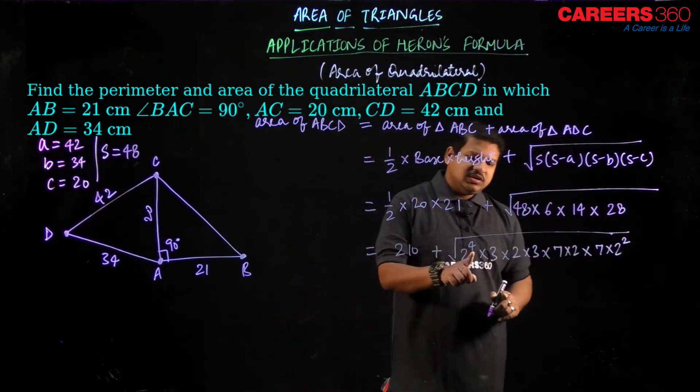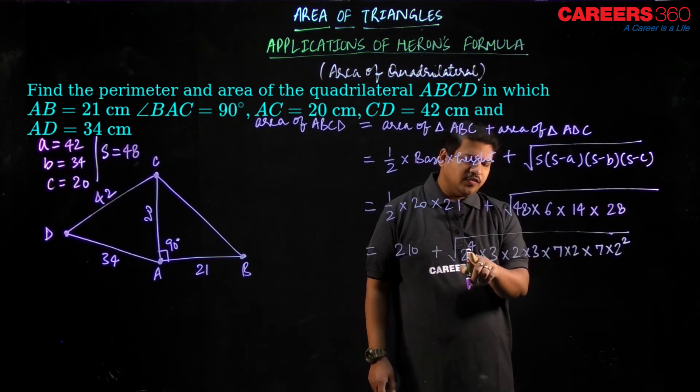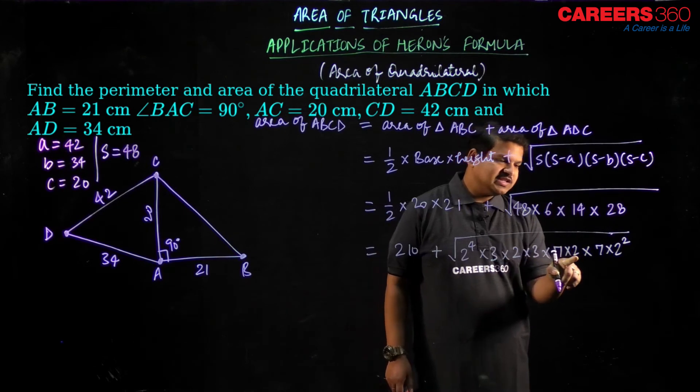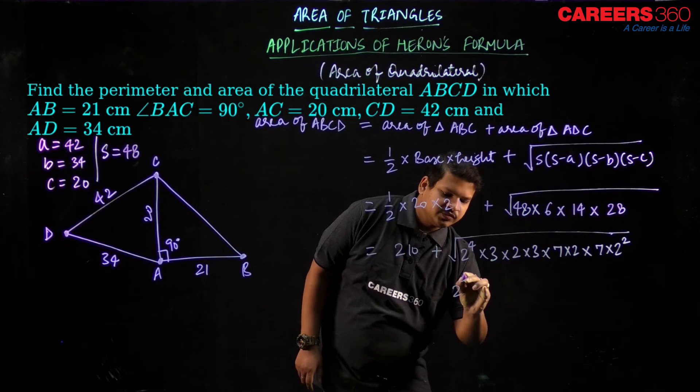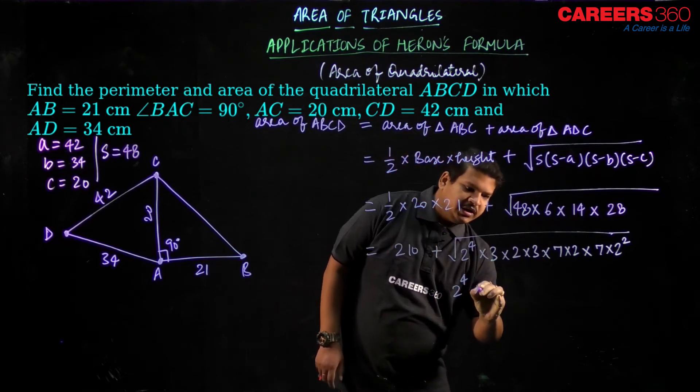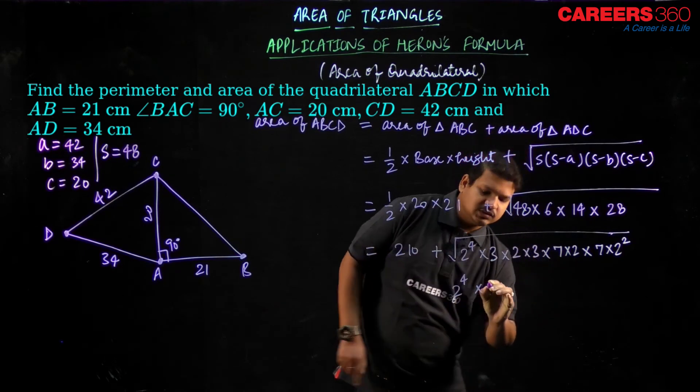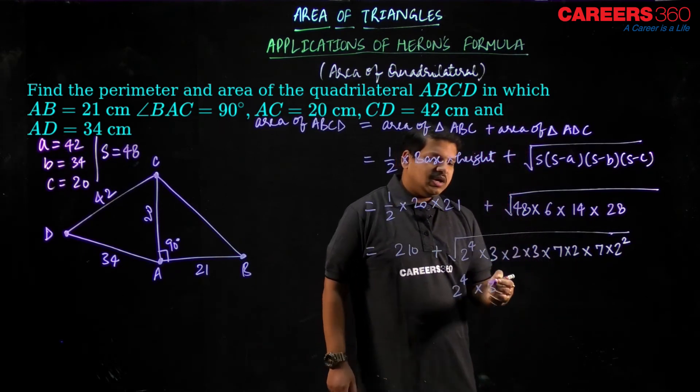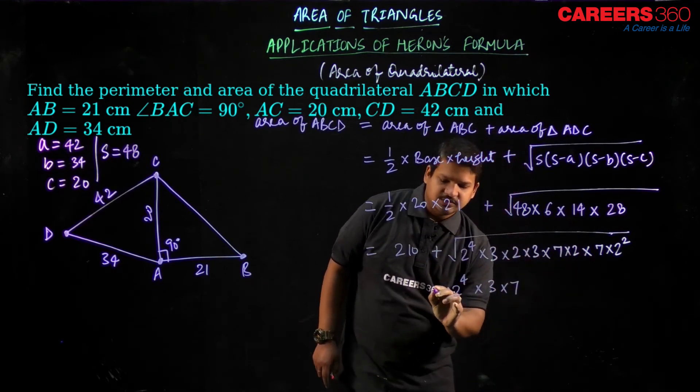And now let us calculate all, add to all the 2's to 4, 5, 6, 6 into 8. What I will be getting 2 to the power 4 into 3, there are 2 3's so out of the square root 1 3 will come and then we have 2 7's so 1 7 will come.